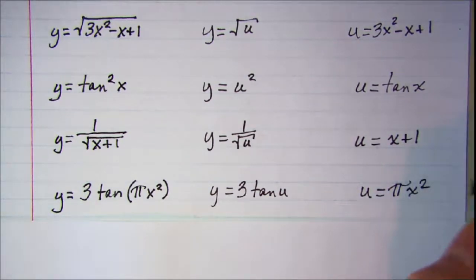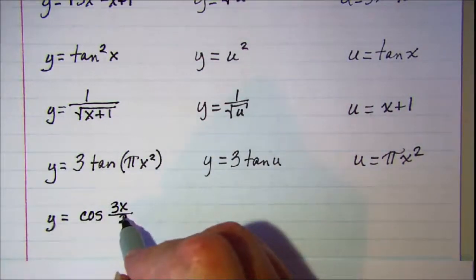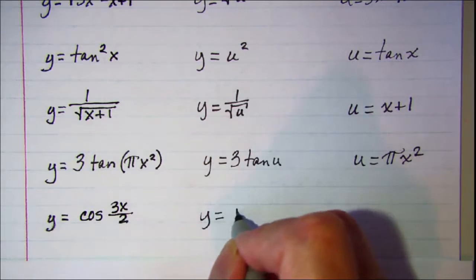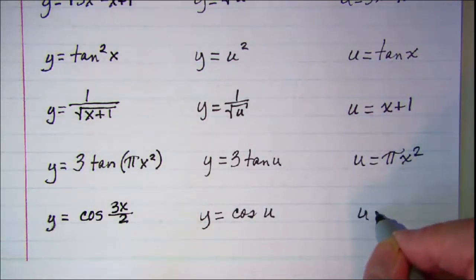And this one we have the cosine of something, so y equals cosine u, and u is 3x over 2.